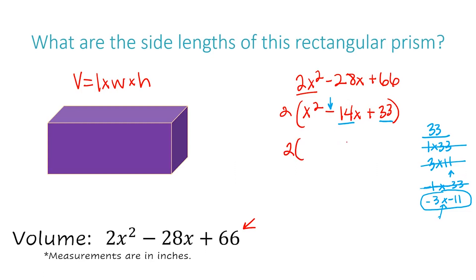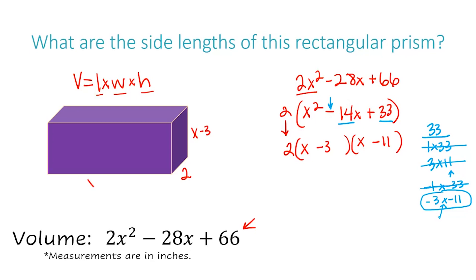I'm going to rewrite the 2 out front, then write my two sets of parentheses for the binomials — the 2 just gets brought down. I write x at the beginning of each parenthesis, and then plug in negative 3 and negative 11, giving me 2 times (x minus 3) times (x minus 11). So one dimension is 2, another is x minus 3, and the third is x minus 11.